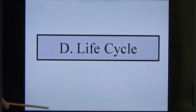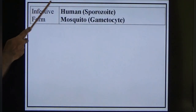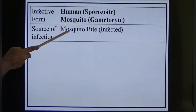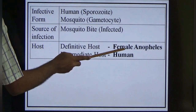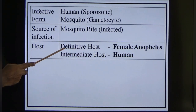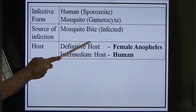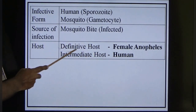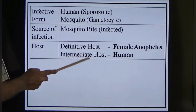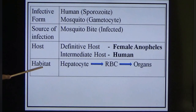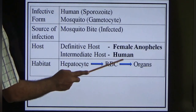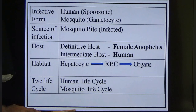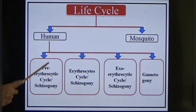Now the very important life cycle. The infective form for humans is the sporozoite; the infective form for the mosquito is the gametocyte. The source of infection is the mosquito bite. Definitive host is the female Anopheles mosquito (sexual cycle occurs there) and the intermediate host is the human (asexual cycle). The parasite first affects the hepatocytes, then goes to the RBC, then to internal organs. There are two types of life cycle: human and mosquito.